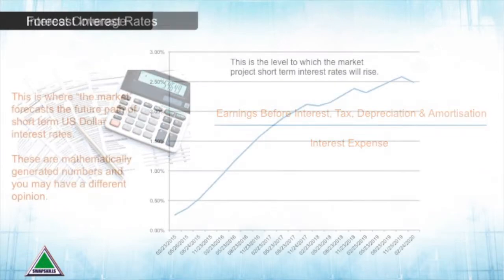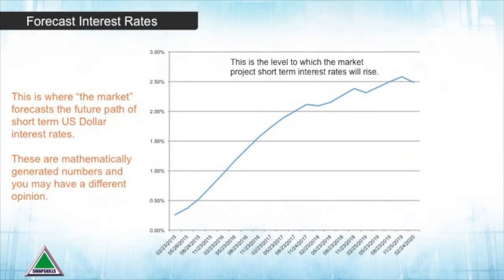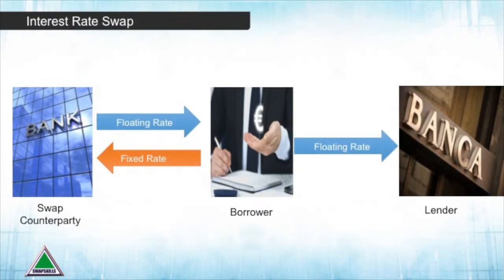An interest rate swap can fix in some of their interest payments. This is where we look at what we call forward interest rates — mathematically generated numbers which reflect where the market sees rates heading. If you're worried about this, what you can do is swap your interest expense onto a fixed rate basis. This means the bank will look after any of your floating rate payments and the borrower will pay them a fixed rate. It's called a swap simply because we're swapping or exchanging interest rate flows.